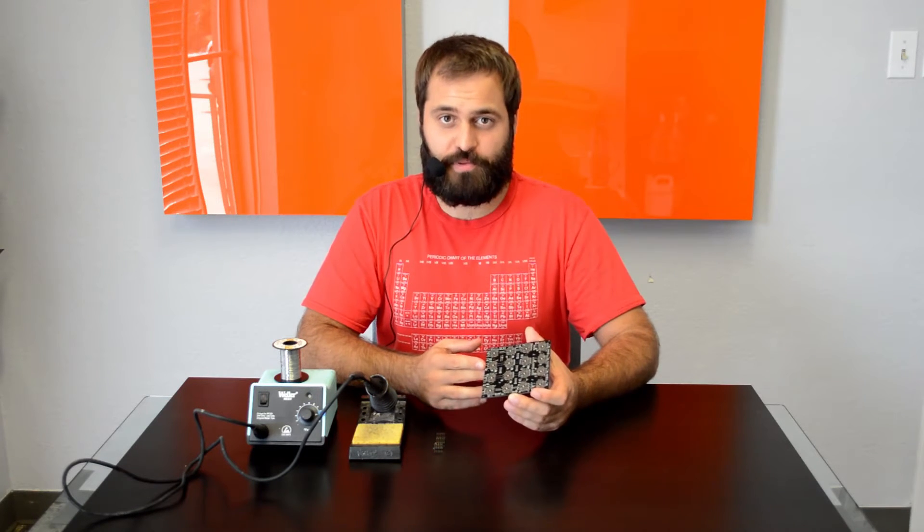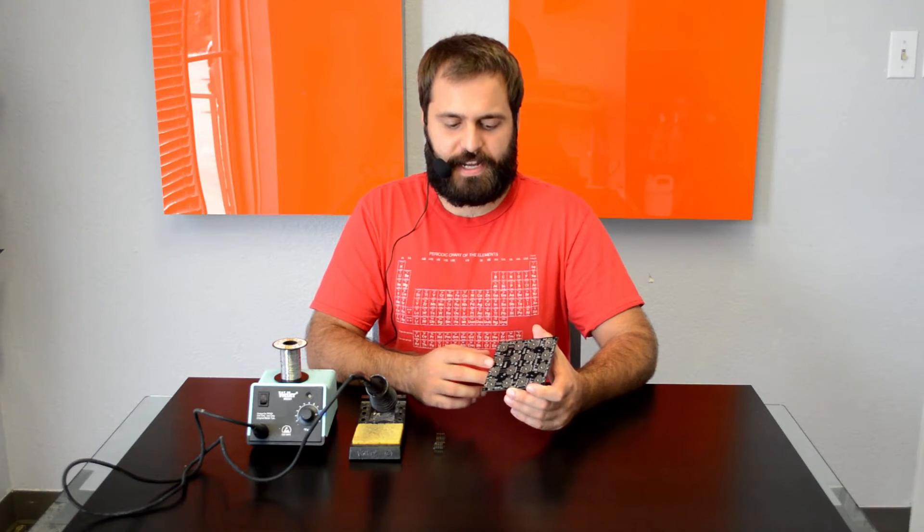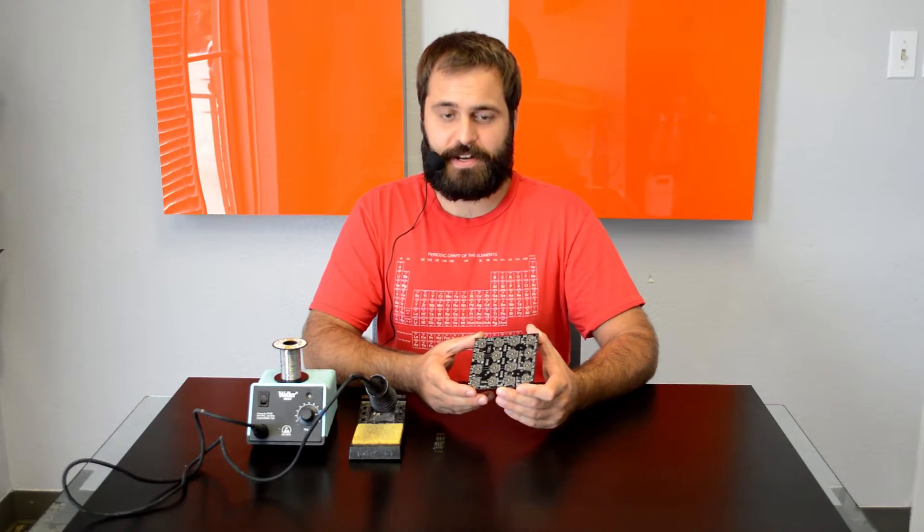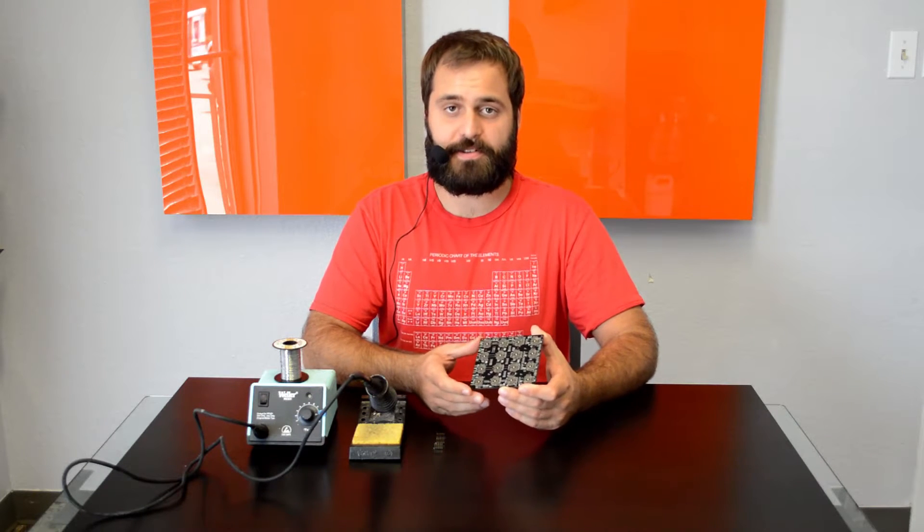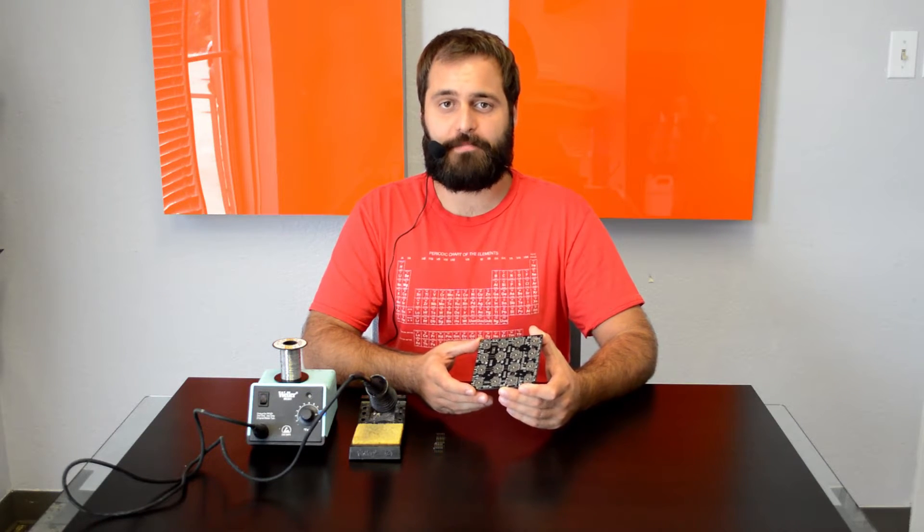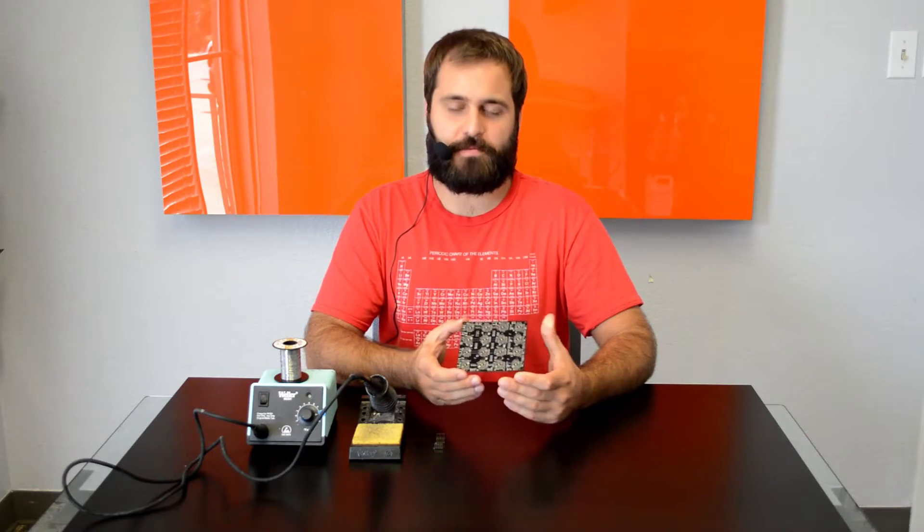These boards come pre-populated with the LEDs and the diodes. So to make this into a 16 button RGB module the only thing you need to add are the pin headers. Today I'm going to run you through how to put the pin headers on an omniboard.